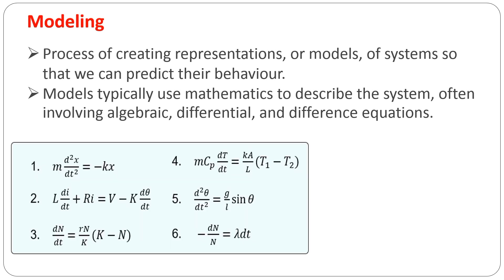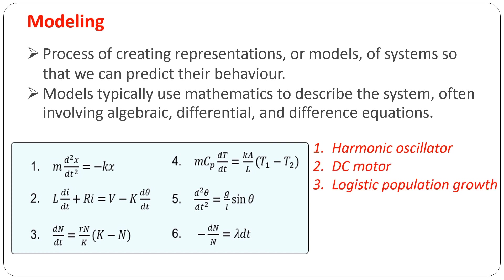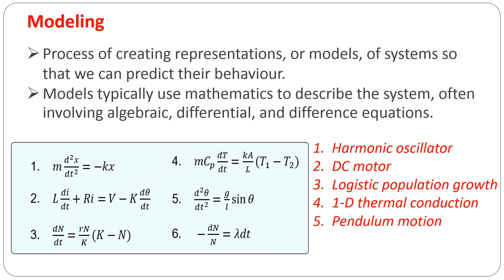The box below contains six common equations that model real-world systems. Equation 1 is the model of a harmonic oscillator, equation 2 is the model of a DC motor, equation 3 is logistic population growth, equation 4 is 1D thermal conduction, equation 5 is the model of pendulum motion, and equation 6 is radioactive decay.